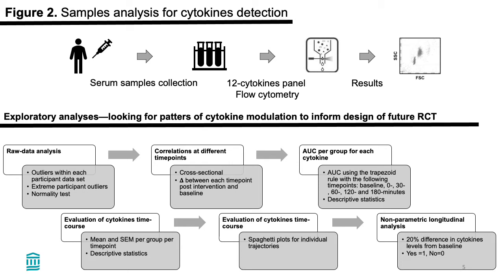Figure 2 depicts the sequence of steps to analyze each blood sample using a commercial human 12-cytokine inflammatory panel. Results were expressed in picograms per milliliter. Once the data was collected, different exploratory analyses were performed, such as correlations at different time points, calculation of area under the curve, evaluation of cytokine time curves for each group, and non-parametric longitudinal analysis.